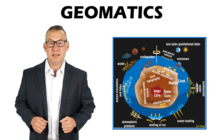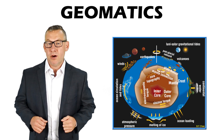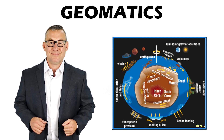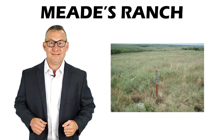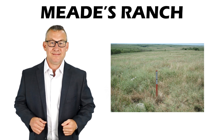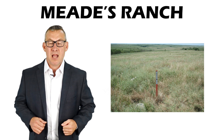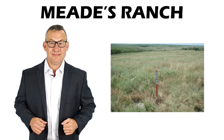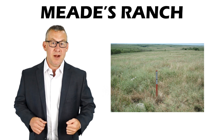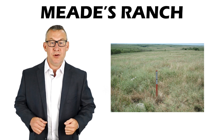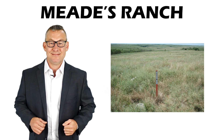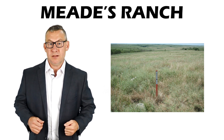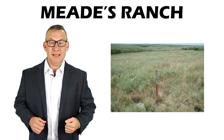Now I'll discuss some of the concepts used in geomatics that aren't prevalent in other sections of the study material. Meade's Ranch is the geographic center of the United States. It is used as a benchmark in creating reference grids and is the anchor point for the Clark Ellipsoid of 1866.